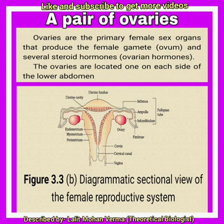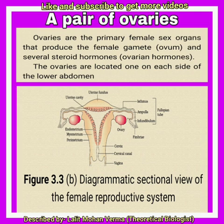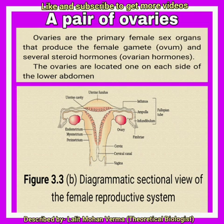A pair of ovaries — these are two in number, 3 cm long, 2 cm wide and 1 cm thick, almond-shaped female gonads. The ovary remains attached to the abdominal wall by a ligament called mesovarium. Each ovary is a compact or solid organ consisting of an outer cortex and inner medulla.